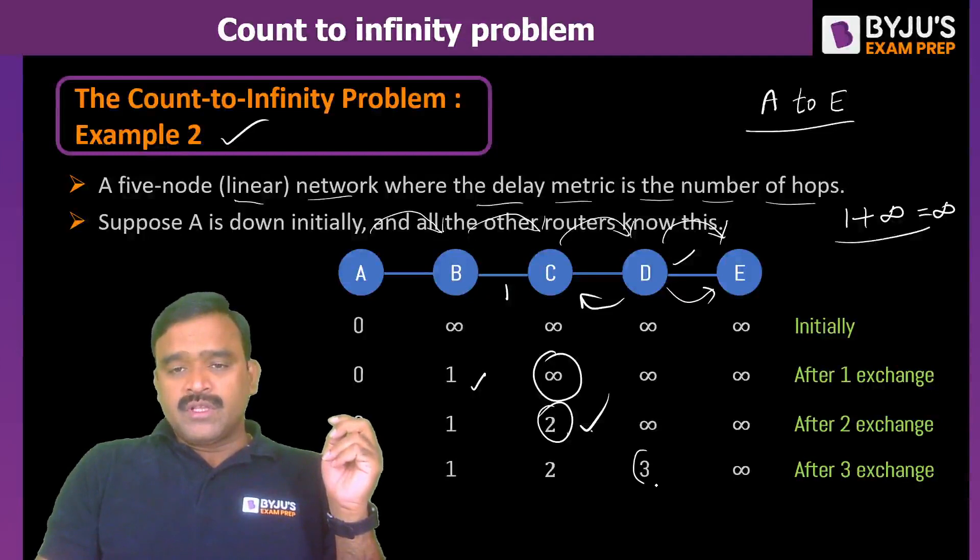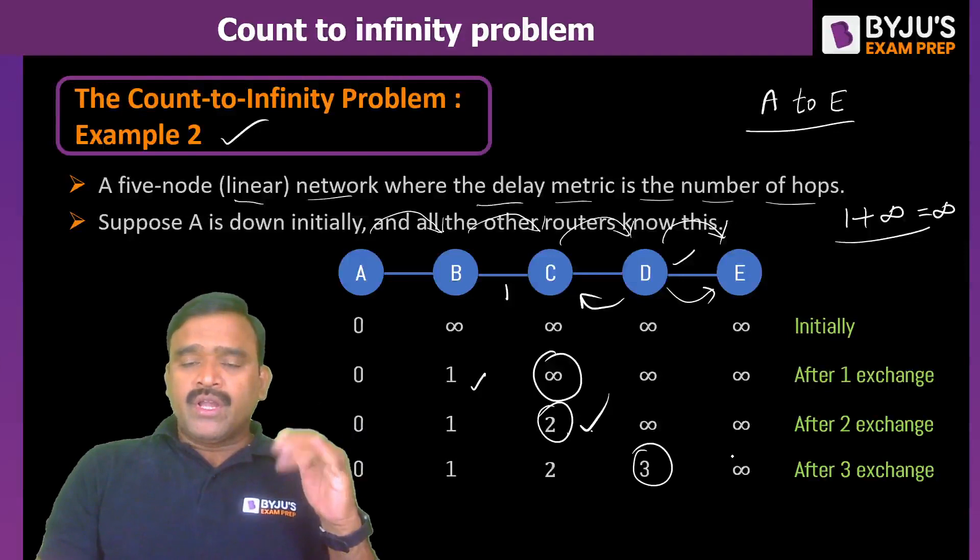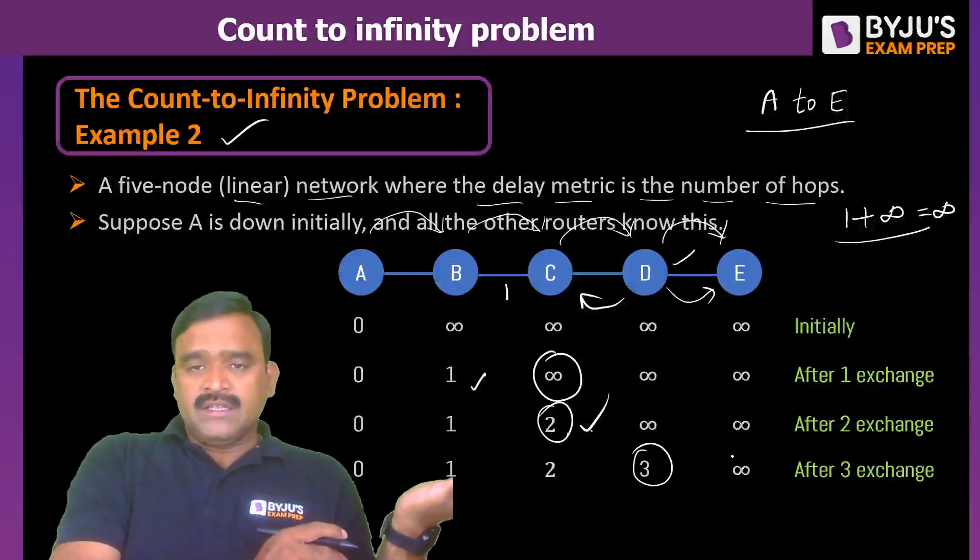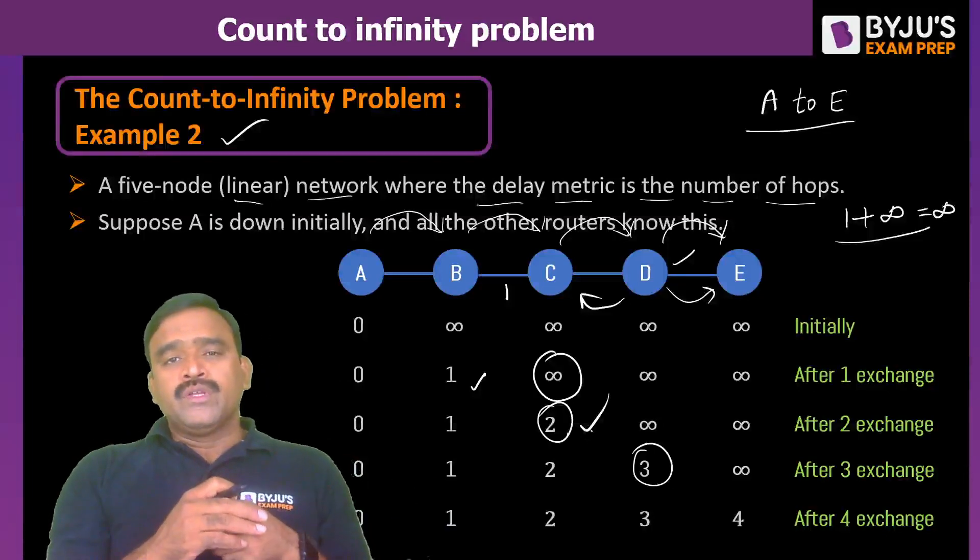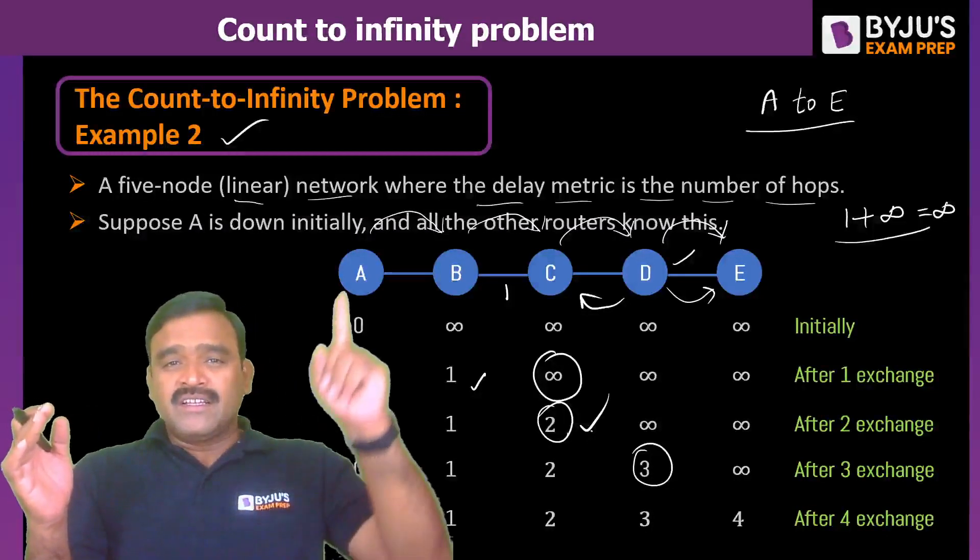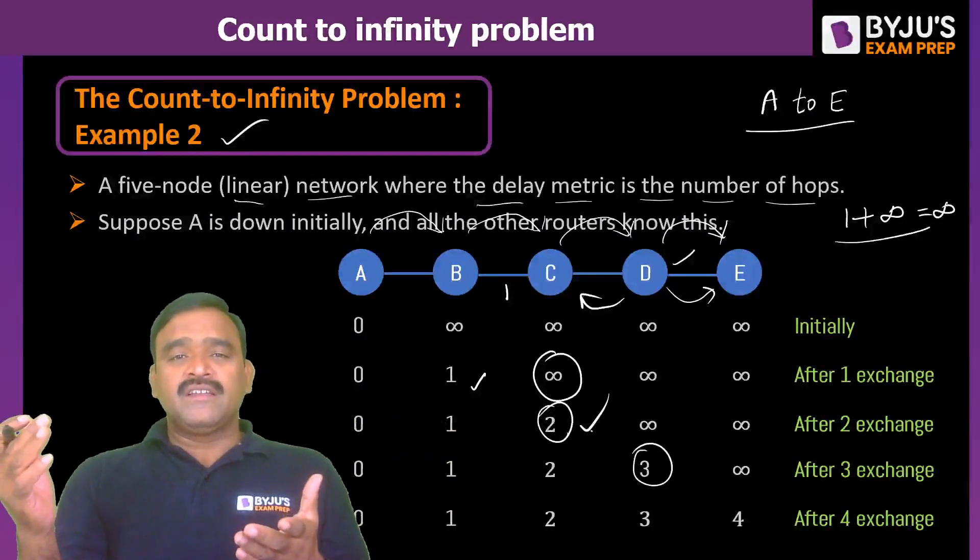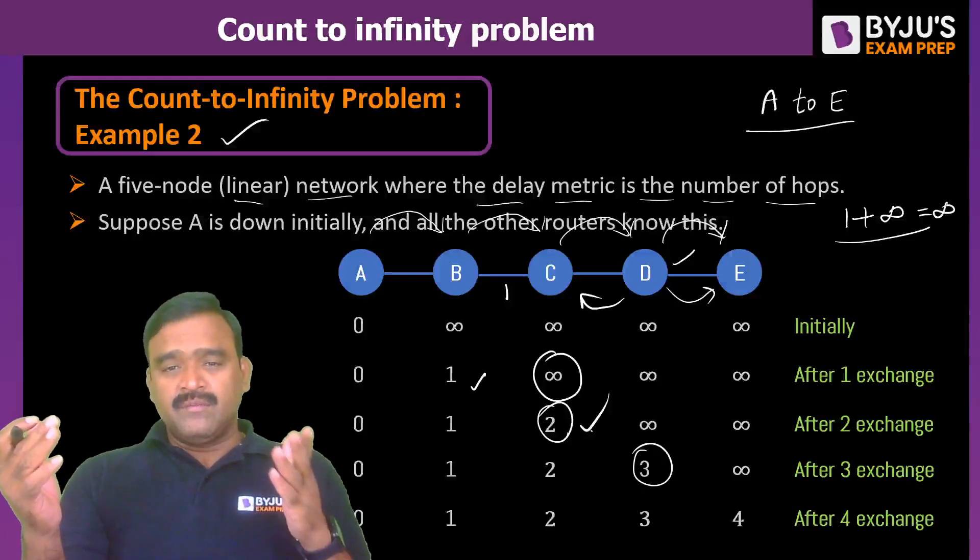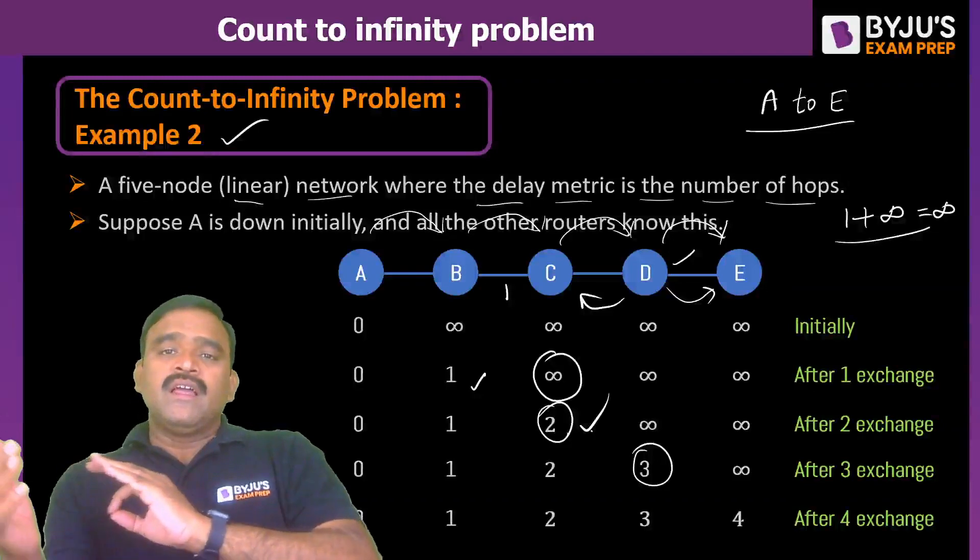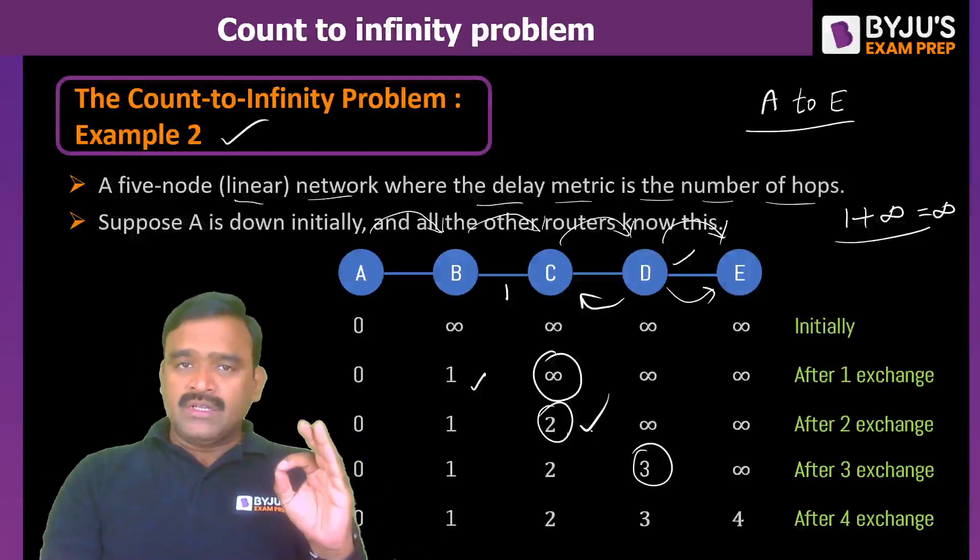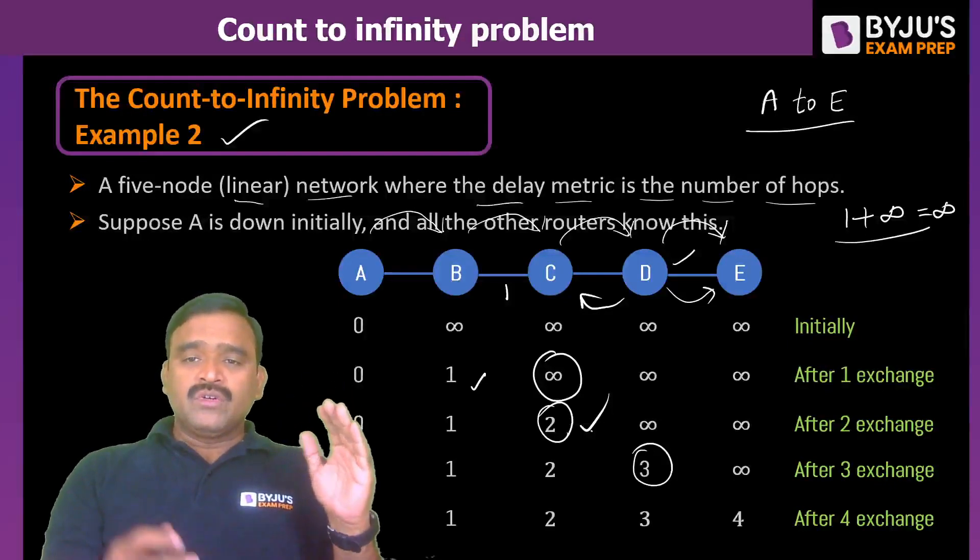Now still E is having infinity. D to A has three now and E to D is one, so it can update by exchanging from D. Within four exchanges, everybody understood that A is available. When A is ready, then B has updated it as one and C updated it as two and D has three and E has four. Within four exchanges, every router understood there is an A and how to reach to A, exact number of hops. This is the normal case.